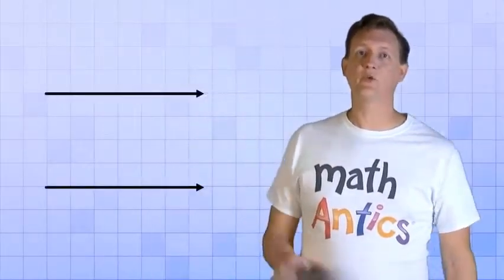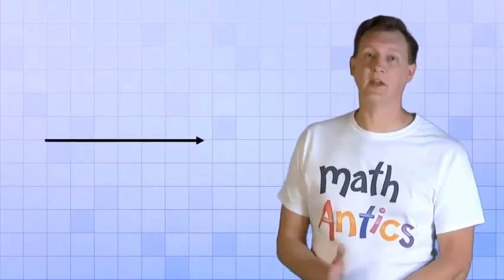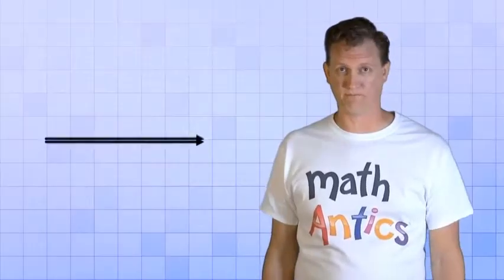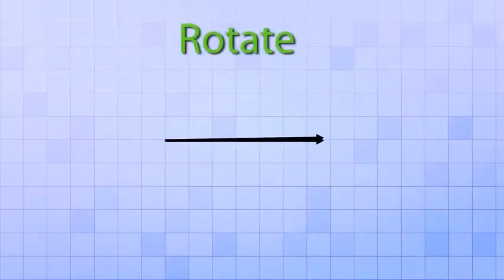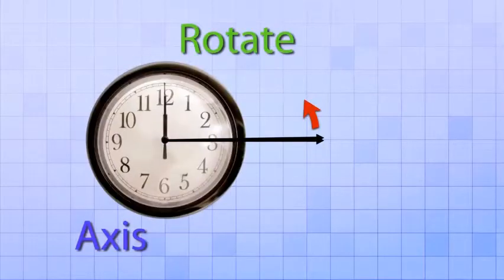To see how we use degrees to measure angles, let's get two rays that point in exactly the same direction. Then, let's put one ray directly on top of the other one so it looks like there's only one ray there, even though there's really two. Now, let's take the ray on top and rotate it just a tiny amount counter-clockwise. This point on the ray will be our axis, or center, of rotation. It's just like the point at the center of a clock that stays stationary while the hands rotate around it.